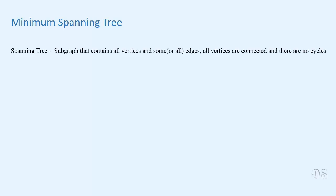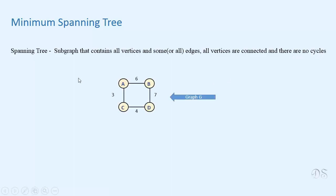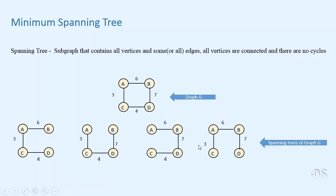We have seen that a spanning tree of a connected graph G is a subgraph T that includes all vertices of G and some or all edges of G such that all vertices are connected and there are no cycles. For example, for this graph G, these all are spanning trees.